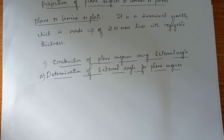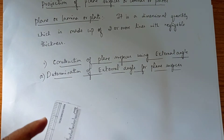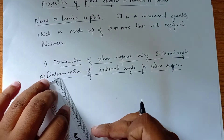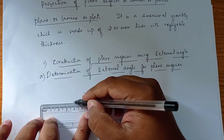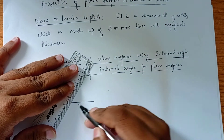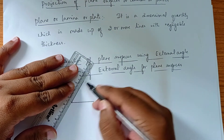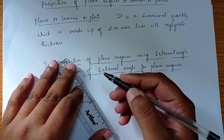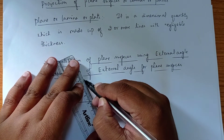In order to do the construction of plane surfaces, we use external angles. Any plane surface is made up of two types of angles. For example, consider a triangle — this angle here is the external angle and this angle is the internal angle.